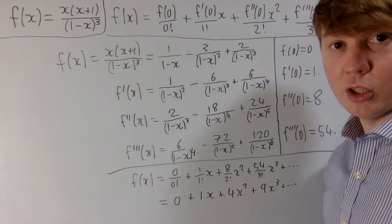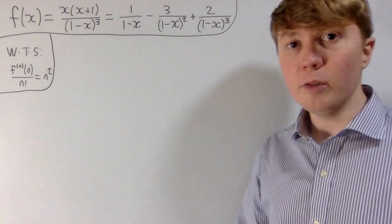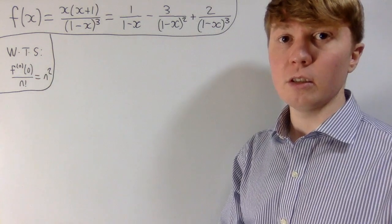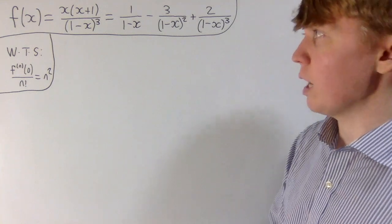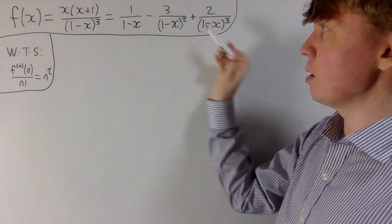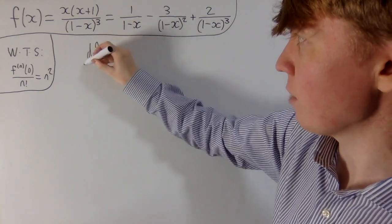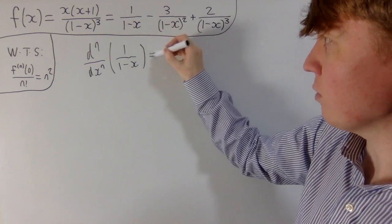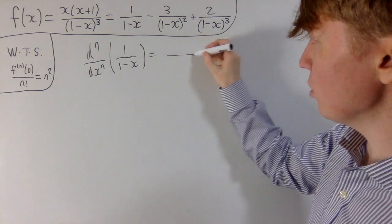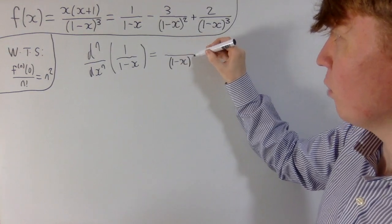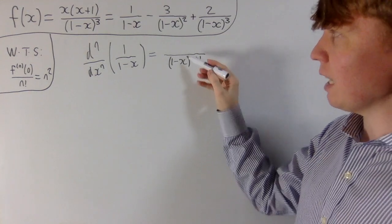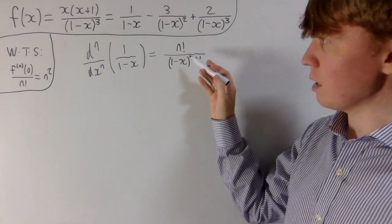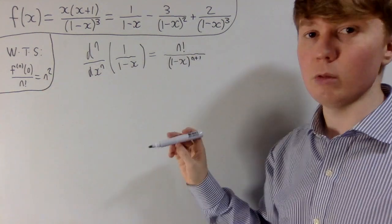We'll have a go at proving that the coefficients in the Maclaurin series expansion of f are indeed the square numbers. We need to show that the general expression for the coefficient of xⁿ is indeed n². We'll differentiate f n times term by term — not the most rigorous argument, but it gives a feel for what's going on. If you keep differentiating 1/(1-x), you just end up with increasing powers of (1-x) in the denominator, giving you n!/(1-x)^(n+1). You can see that the n! will cancel when we divide by n!.